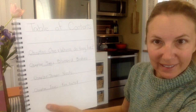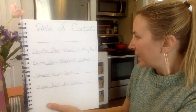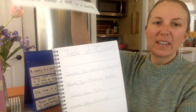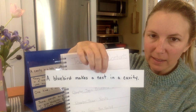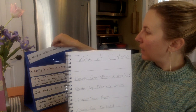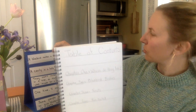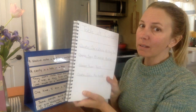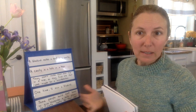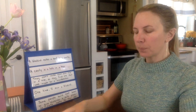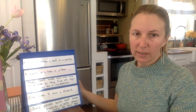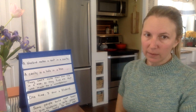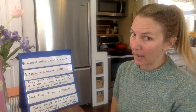It was this chapter called Nests. I did write a sentence yesterday that didn't fit in with my other chapter. It said a bluebird makes a nest in a cavity. I decided to take it out because yesterday I was writing about bluebird bodies, and that didn't make any sense to have that there. So I put it in today's chapter about nests. I'm going to read you the sentences I have so far, and you're going to tell me in your mind if you can find the one that is not about nests.